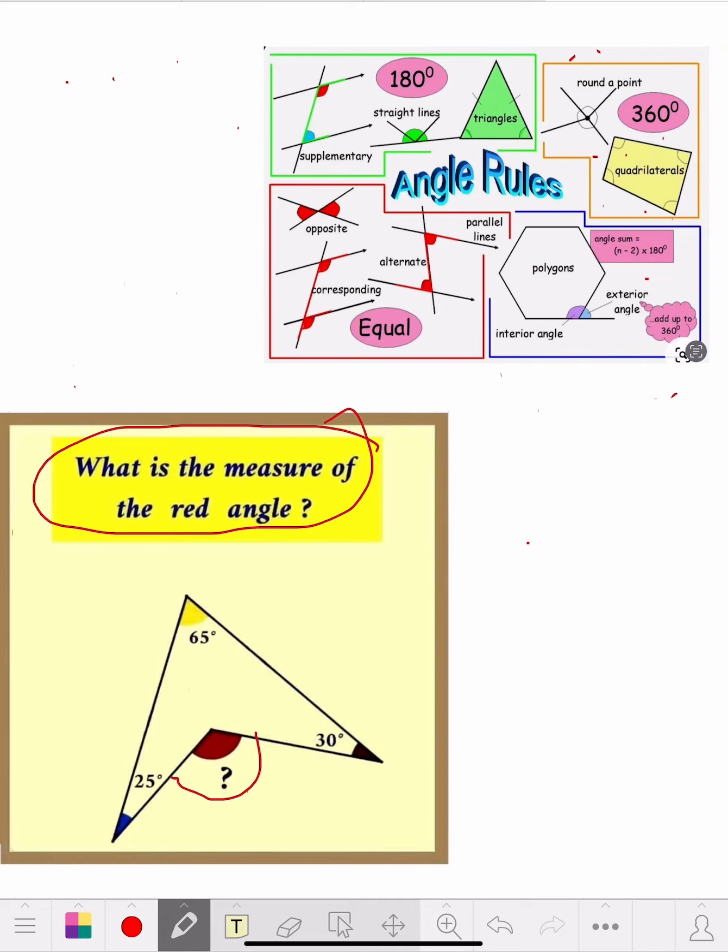There's rules. I put the angle rules again. This is actually a four-sided figure. You count the sides. One, two, three, four. A quadrilateral.